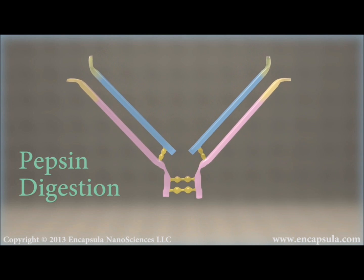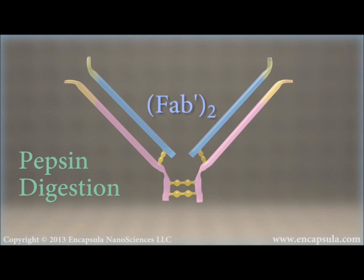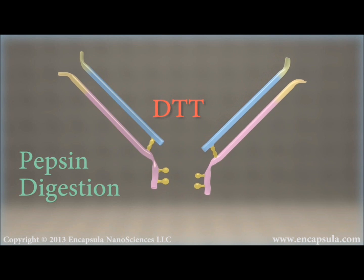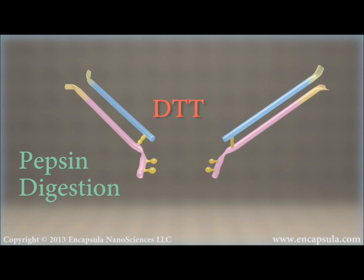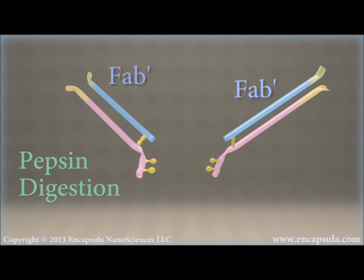The resulting Fab'2 fragment is composed of two disulfide-connected Fab' units. The Fc fragment is extensively degraded. The Fab' fragments are fragmented into two Fab' by the DTT redox reagent.